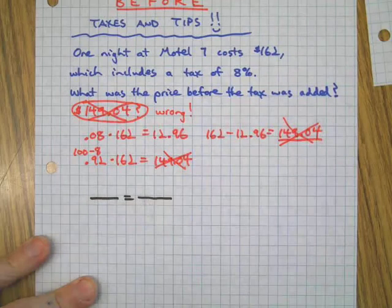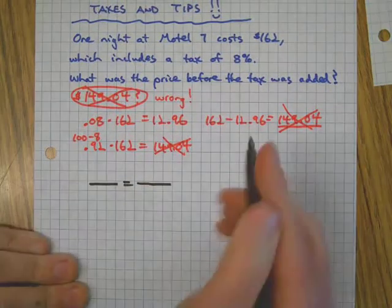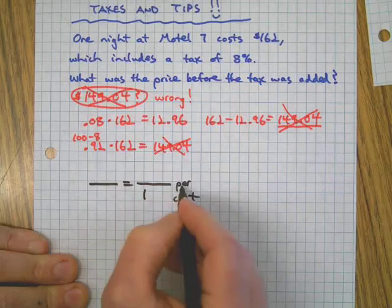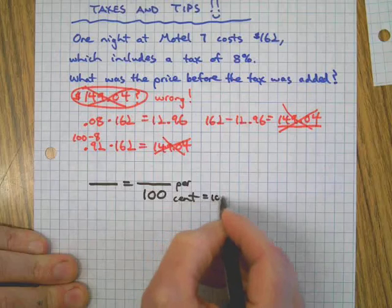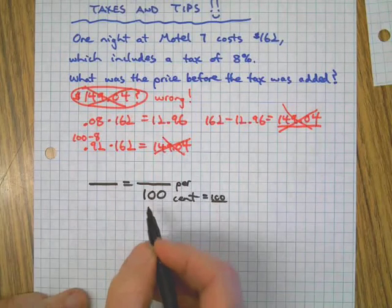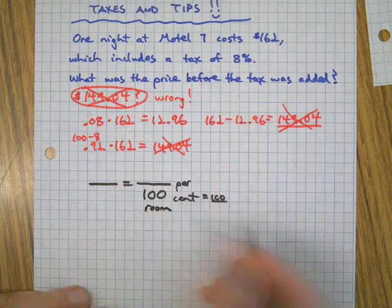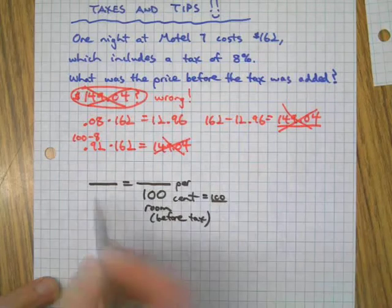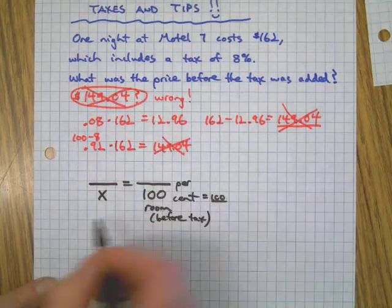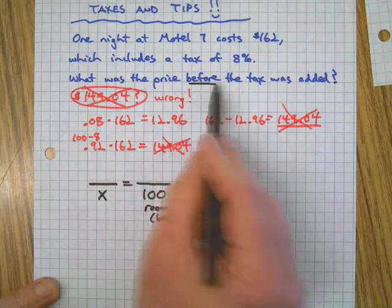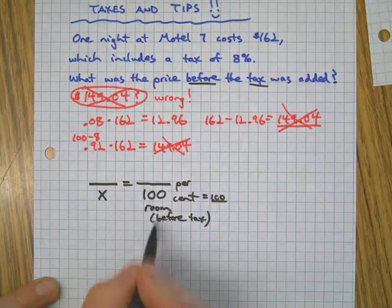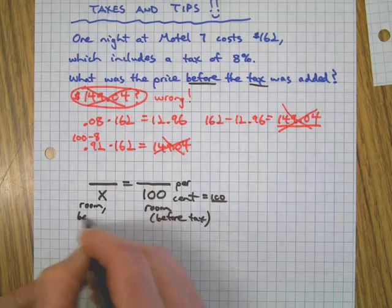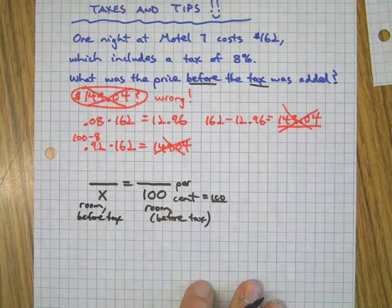We're going to try to fit this into a proportion. Now first of all, anytime we have a percent problem, the fraction bar - think of that as the word 'per' - and 'cent' means a hundred. So that always goes on the bottom, and in this case the 100 represents the price of the room before the tax was added. A hundred percent of the room price, does that make sense? Now over here I'm going to put the x. You know why? Because that's the question here: what was the price before the tax? So since a hundred percent is the price of the room before the tax from a percentage standpoint, this is also the price - this is the room before the tax.